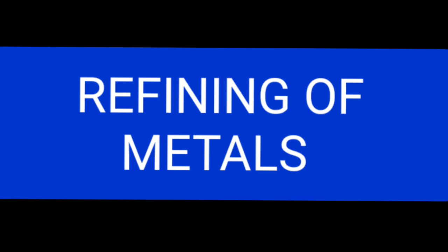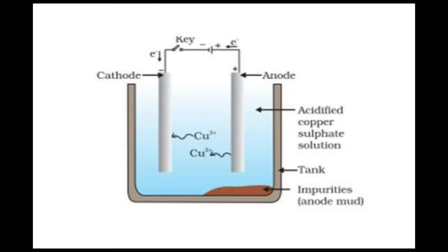The most important and most widely used method for refining impure metal is electrolytic refining. Its apparatus has three components: first, a thick block of the impure metal is made the anode and connected to the positive terminal of the battery. Second, a thin strip of the pure metal is made the cathode and connected to the negative terminal. Third, a water-soluble salt of the metal to be refined is taken as the electrolyte.